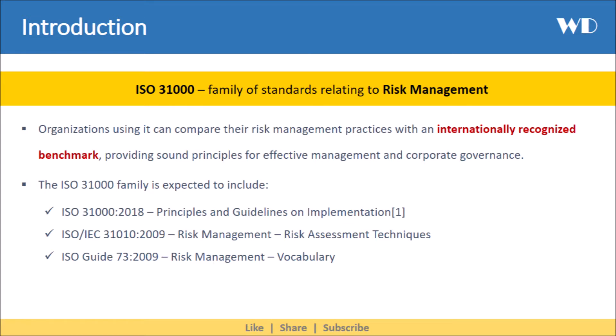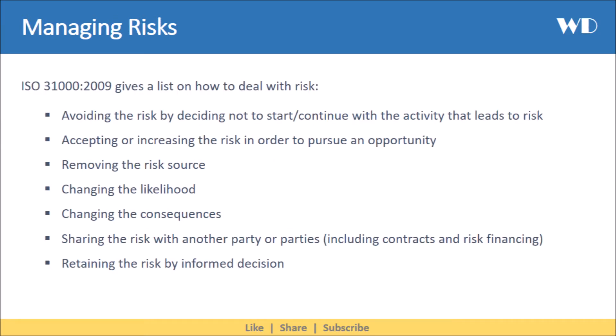The ISO 31000 family is expected to include the below standards. It helps you to manage risk by avoiding the risk by deciding not to start or continue with the activity that leads to the risk; accepting or increasing the risk in order to pursue an opportunity; removing the risk source; changing the likelihood; changing the consequences; sharing the risk with another party or parties; or retaining the risk by informed decision.